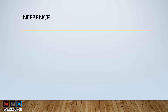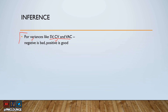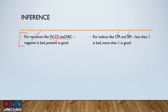A helpful inference to remember: for variances — SV, CV, and VAC — a negative value is bad and a positive value is good. For indices — CPI and SPI — a value less than one is bad and a value greater than one is good. For TCPI, the opposite of the index rule applies: less than one is good (under budget) and greater than one is bad (over budget).